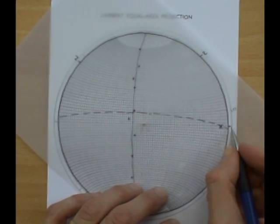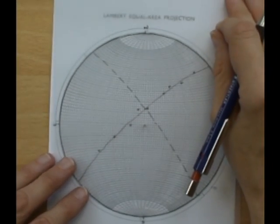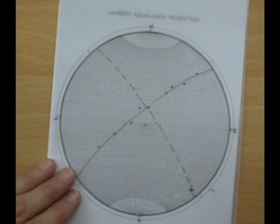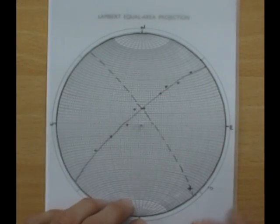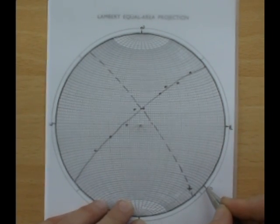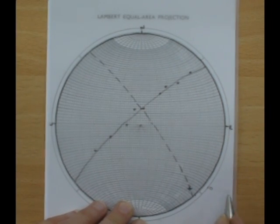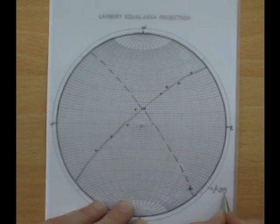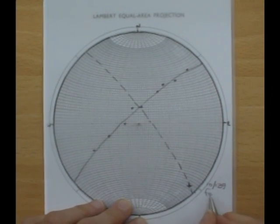And just mark where the equator is, rotate the tracing paper back round to north and measure off the azimuth. So 90, 100, 110, 120, 130, 140, no, 139. There we go. So we have a plunge of 10 degrees and azimuth of 139 for the fold axis.